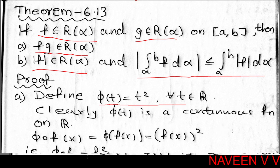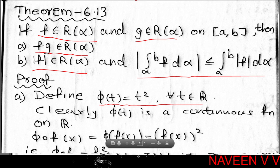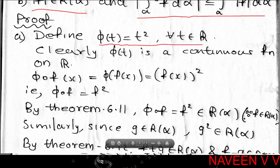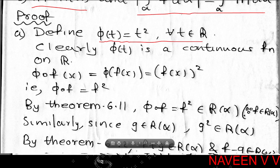For the first part of the proof, define φ(t) = t² for all t belonging to ℝ. This is a polynomial function on the real line, so it is continuous. The composite function φ∘f(x) = f(x)², so by Theorem 6.11, f² belongs to R(α).